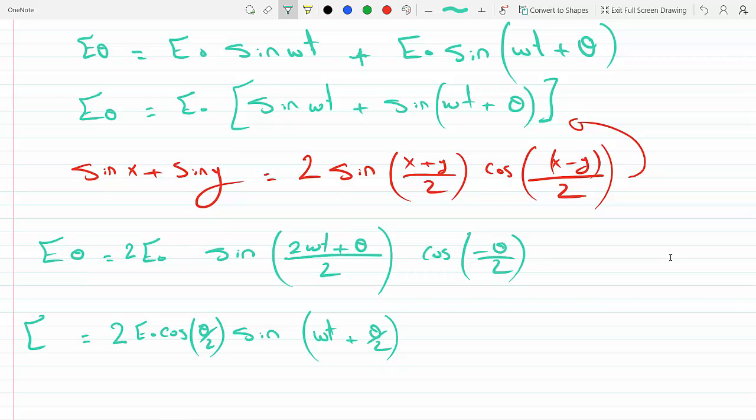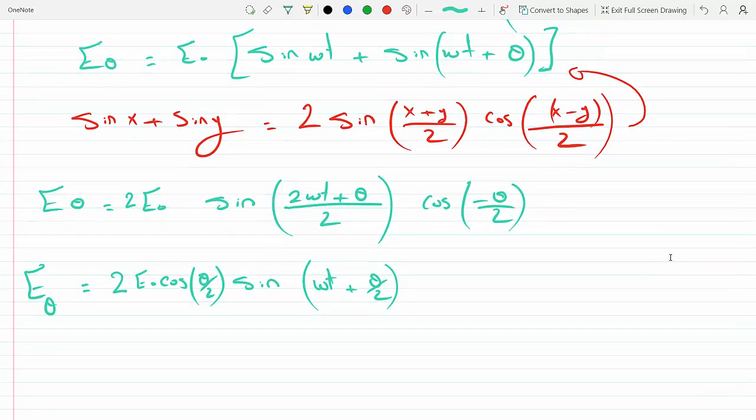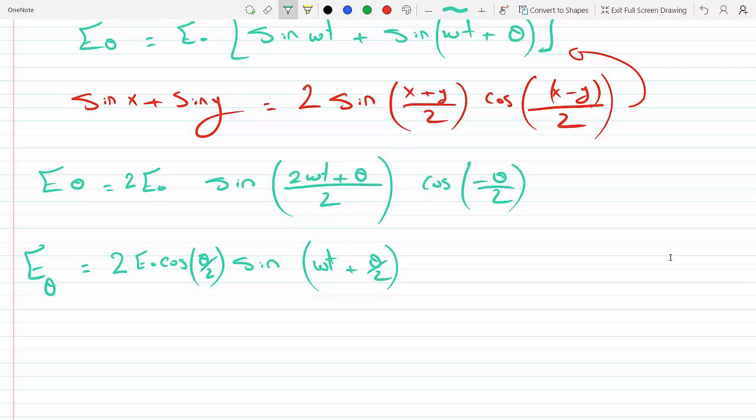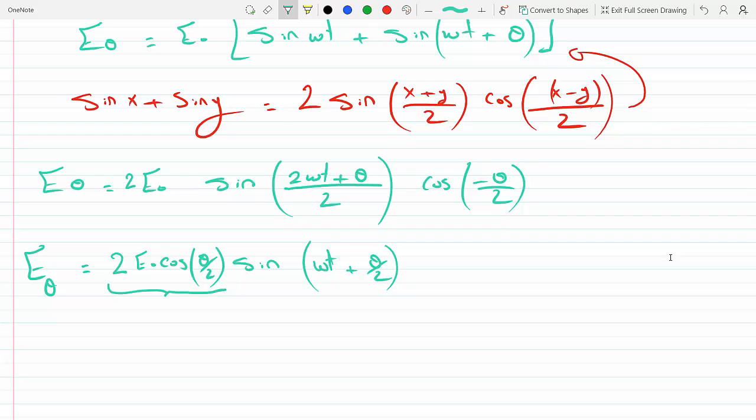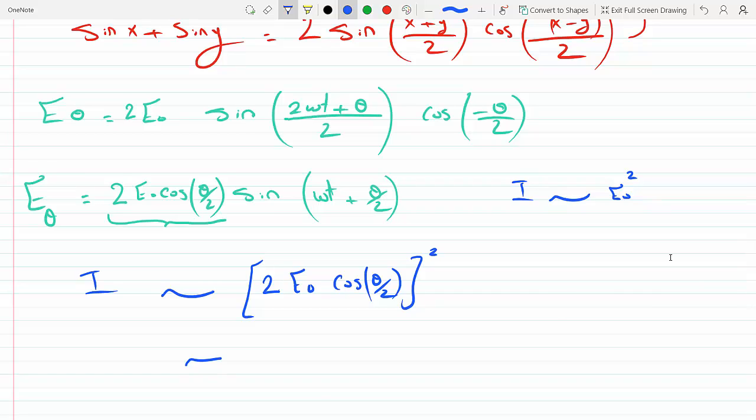And so this wave will have a frequency of omega, but its amplitude has an additional factor of two cosine theta over two. And so this will be the entire amplitude. And we know generally speaking that the irradiance is proportional to the amplitude squared. So in this case, I will be proportional to 4E0 squared cosine squared theta over two.